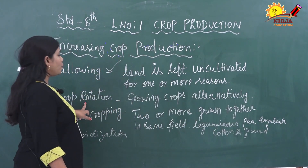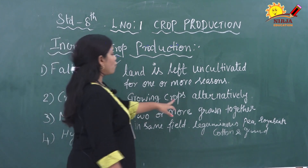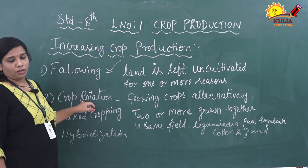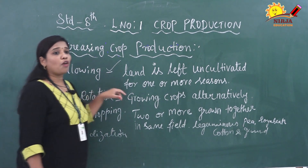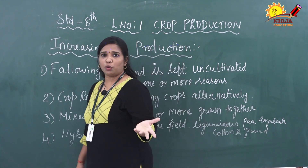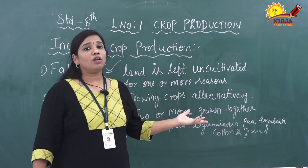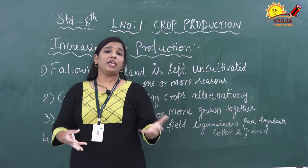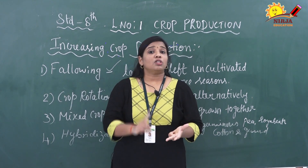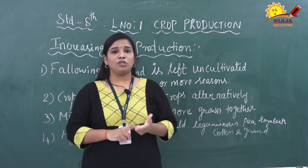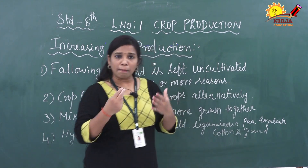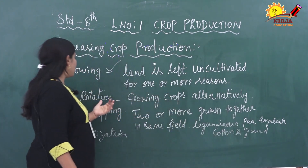Crop rotation is nothing but growing crops alternatively. What is the use of crop rotation? The farmer can get benefit in any situation — suppose one time rain falls or not, the next season they still get benefit. Another benefit is the soil texture will not be damaged and nutrient replenishment occurs properly. This is the main purpose of crop rotation.